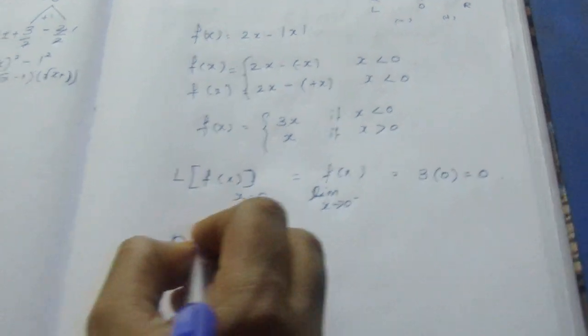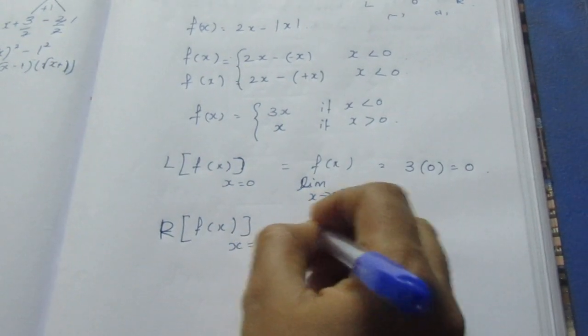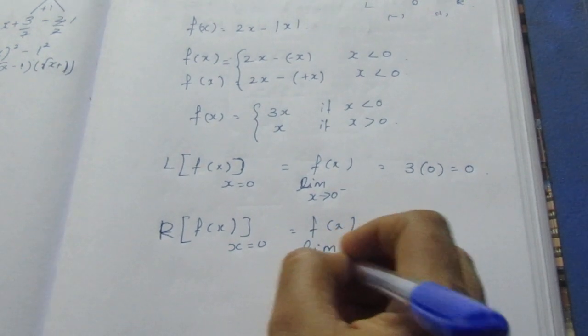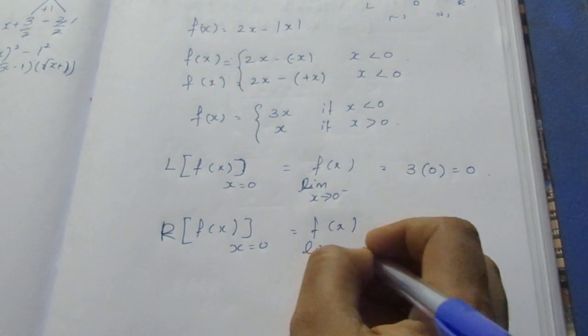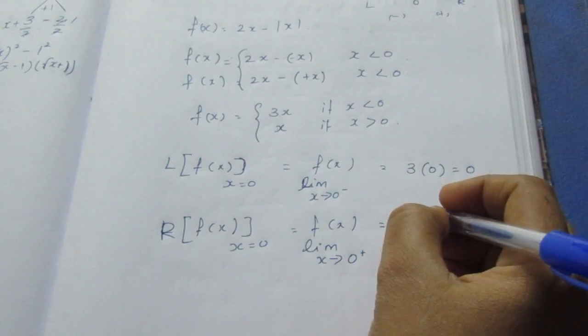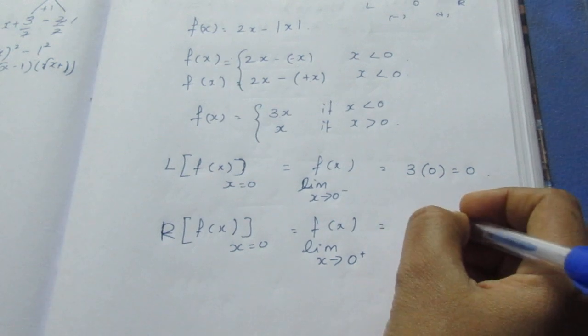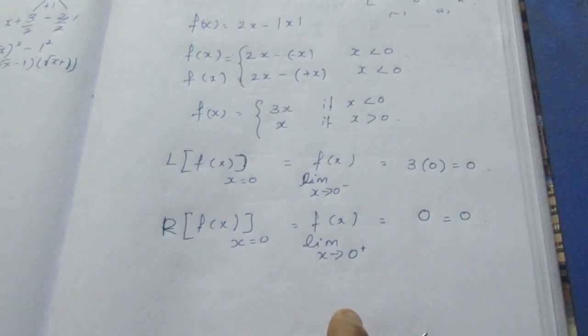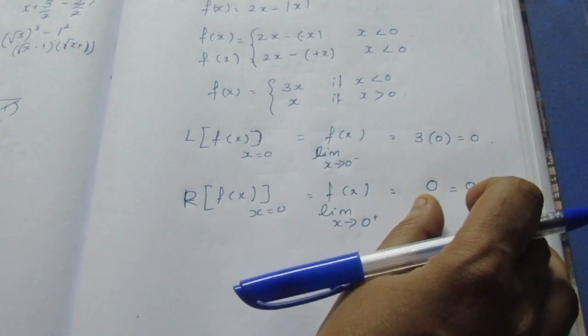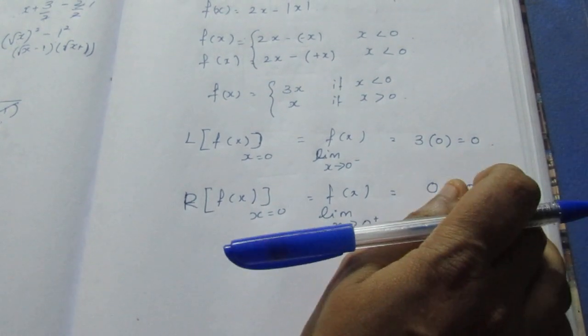Sorry, this is the right hand side. x tends to 0 negative. f(x), limit x tends to 0 positive. x tends to 0 negative, we have 0. 0, we have this 0.